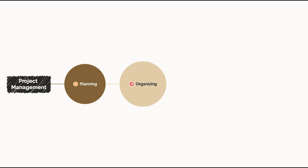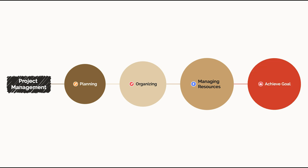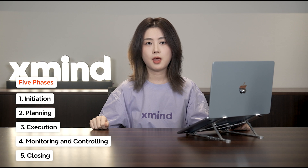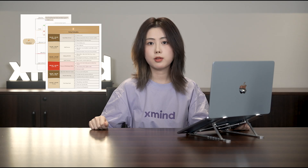Project management is about planning, organizing, and managing resources to achieve a specific goal. It's typically broken down into five key phases. We'll use mind maps to break down each phase and see how XMind can make the process smoother.